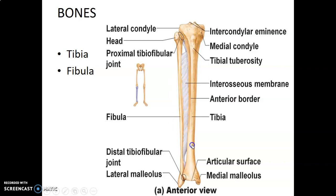The tibia is the main weight-bearing bone. We have the lateral and medial epicondyles, the intercondylar eminences, the tibial tuberosity, the head of the fibula, and the neck. The proximal and distal tibiofibular joints are syndesmotic — fibrous joints. That's the shaft of the fibula, the lateral malleolus of the fibula, and the medial malleolus of the tibia, along with the articular surface.